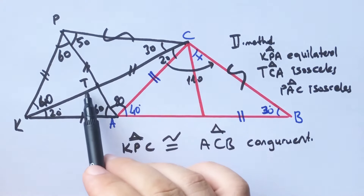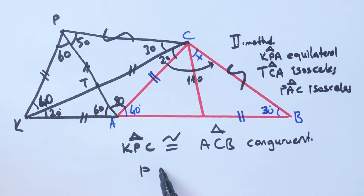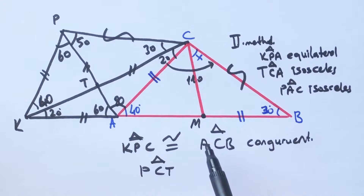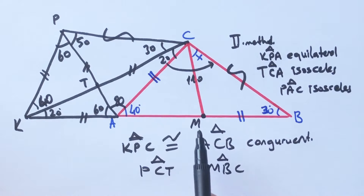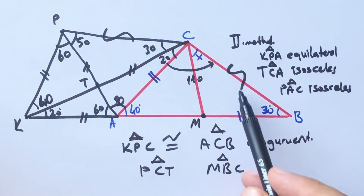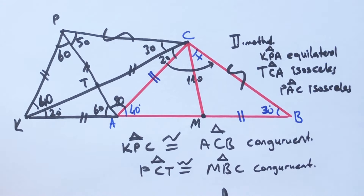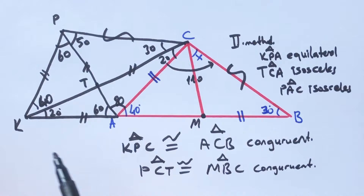Finally, consider triangle PCT. We know that if two triangles have the same two lengths and the angle between them, let's call this point M — triangle MBC and triangle MBC are congruent, because these two triangles have the same two lengths and the angle which is between these two lengths.